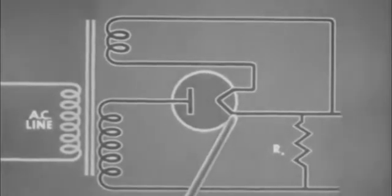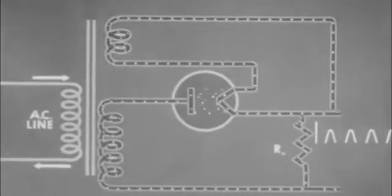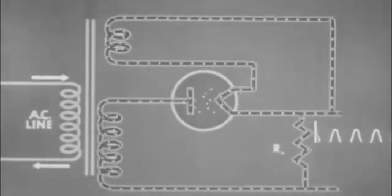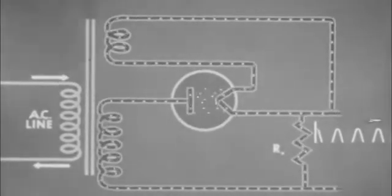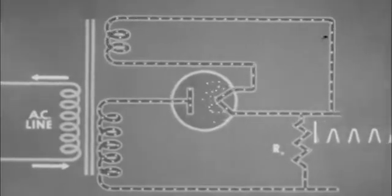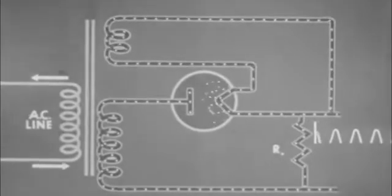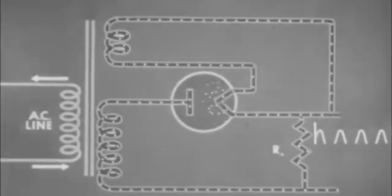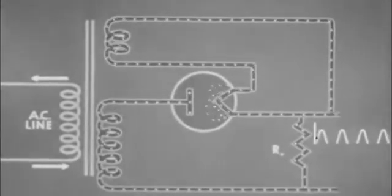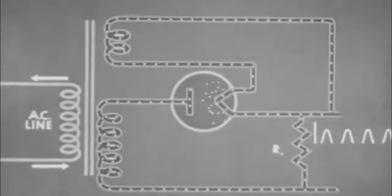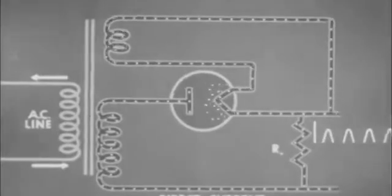With such a circuit in action, electrons rush in the upper or filament circuit in first one direction and then the other. The electrons in the plate circuit move to the plate only when it is positive. A unidirectional pulsating current flows in the plate circuit and the pulsating voltage drop appears across the resistor.